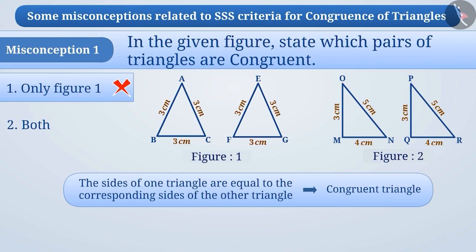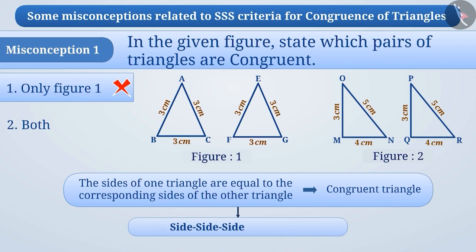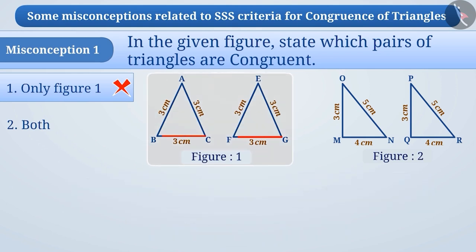This condition of congruency of triangles is called the side-side-side criterion, or in short, SSS criterion. In the first figure, all the sides of the two triangles are 3 cm in length, so the triangles in the first figure are congruent.